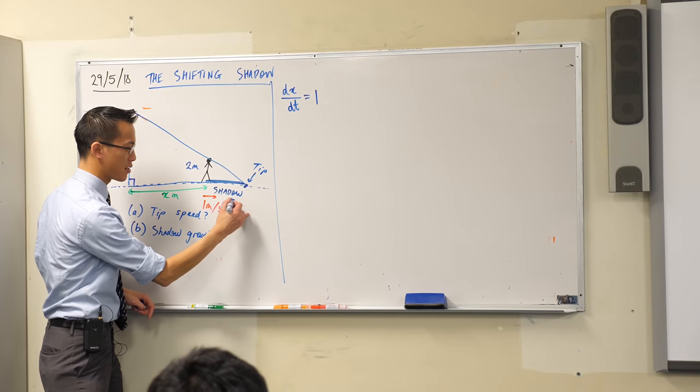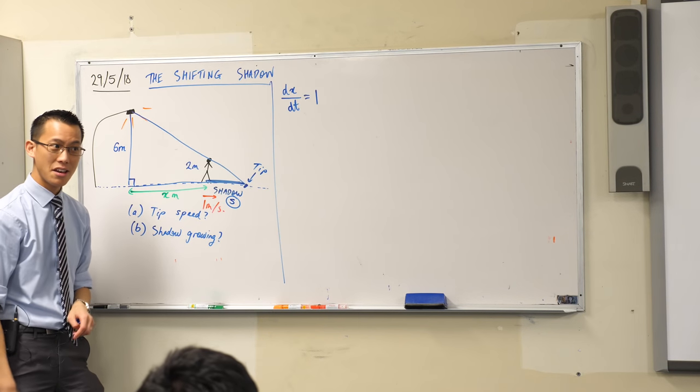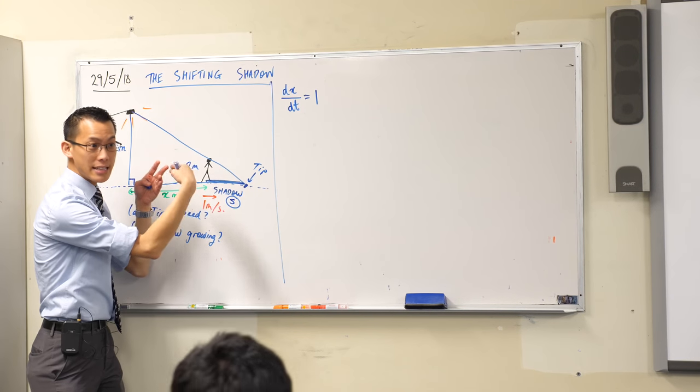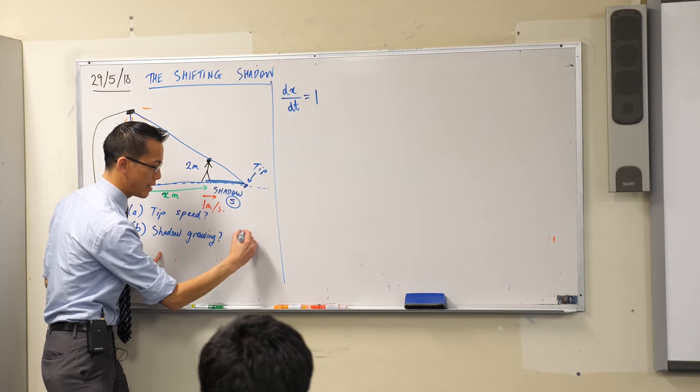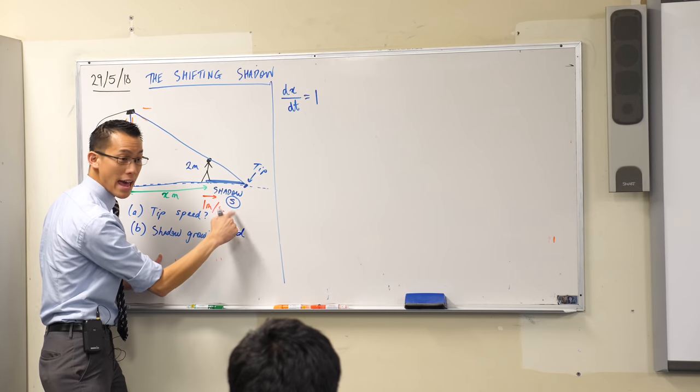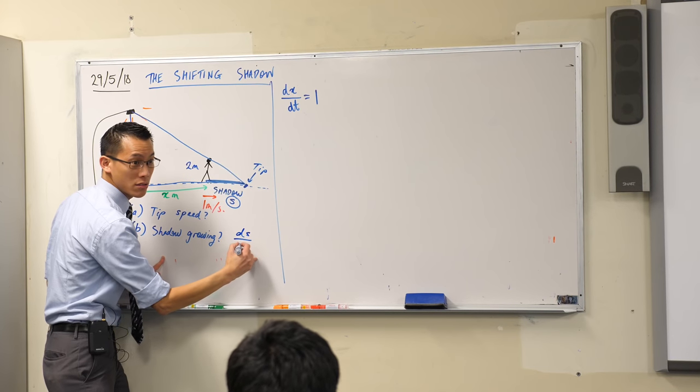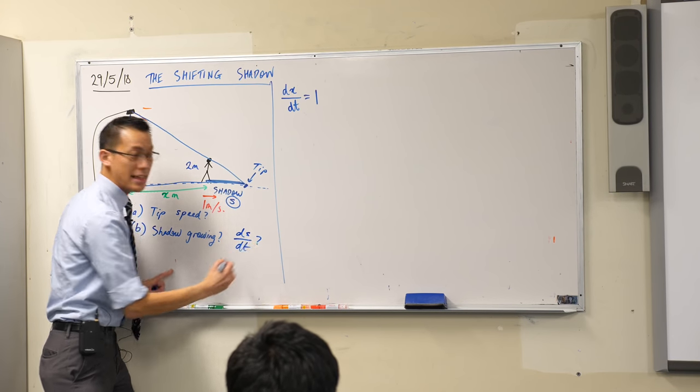So that's this length here, and it's a variable. So in fact, the growth of the shadow is really d, it's the change in s, as compared to time. That's what I'm after.